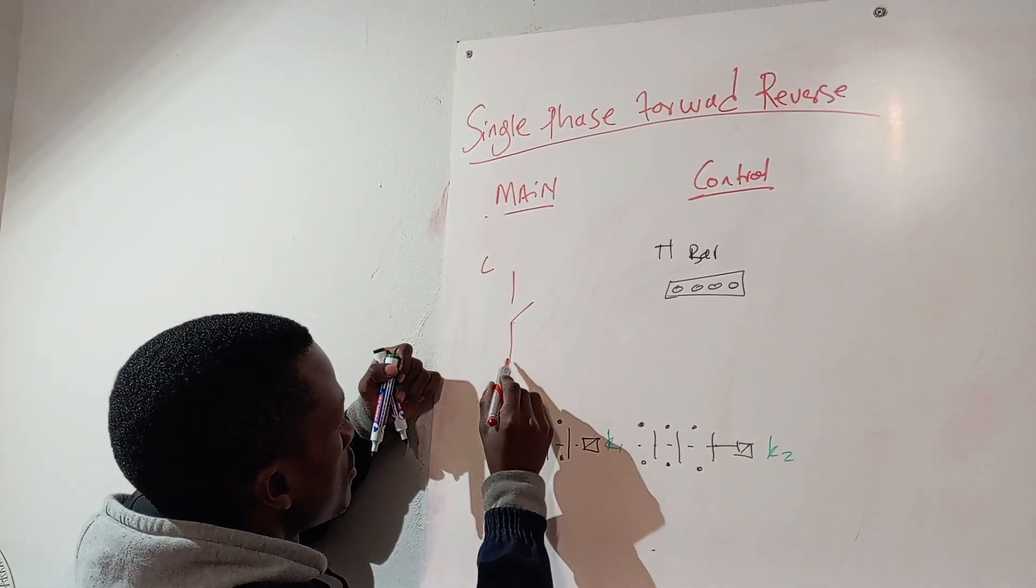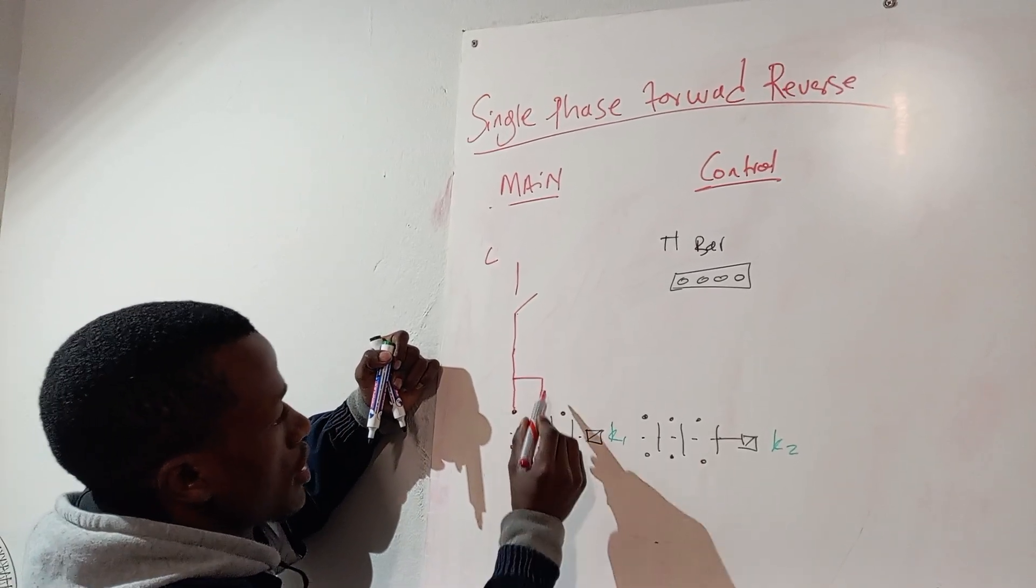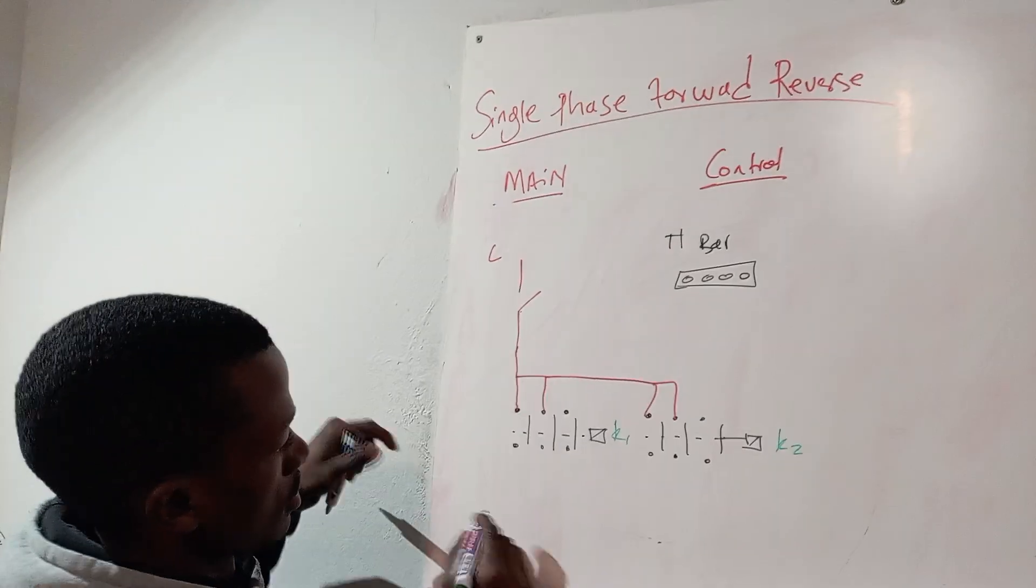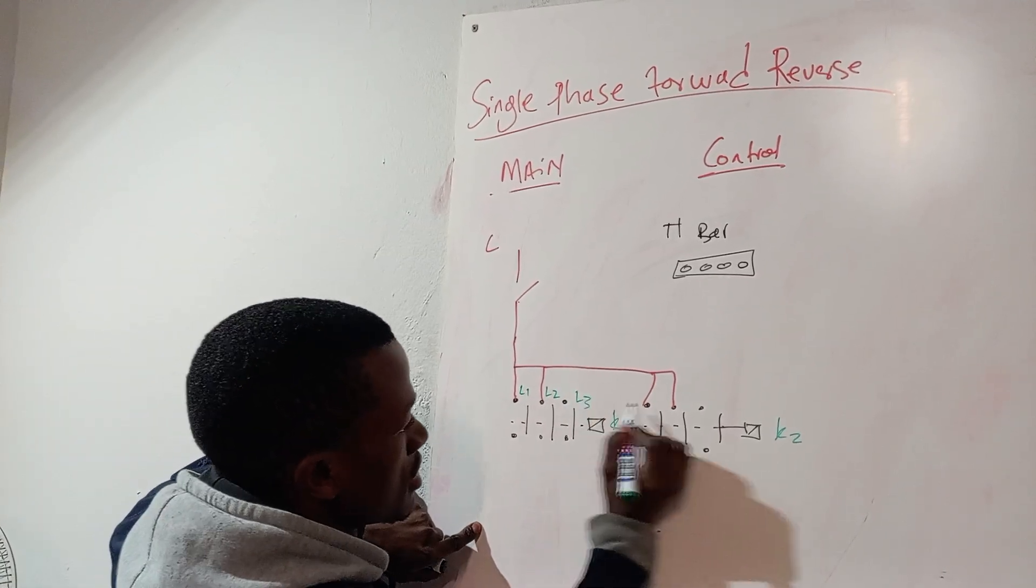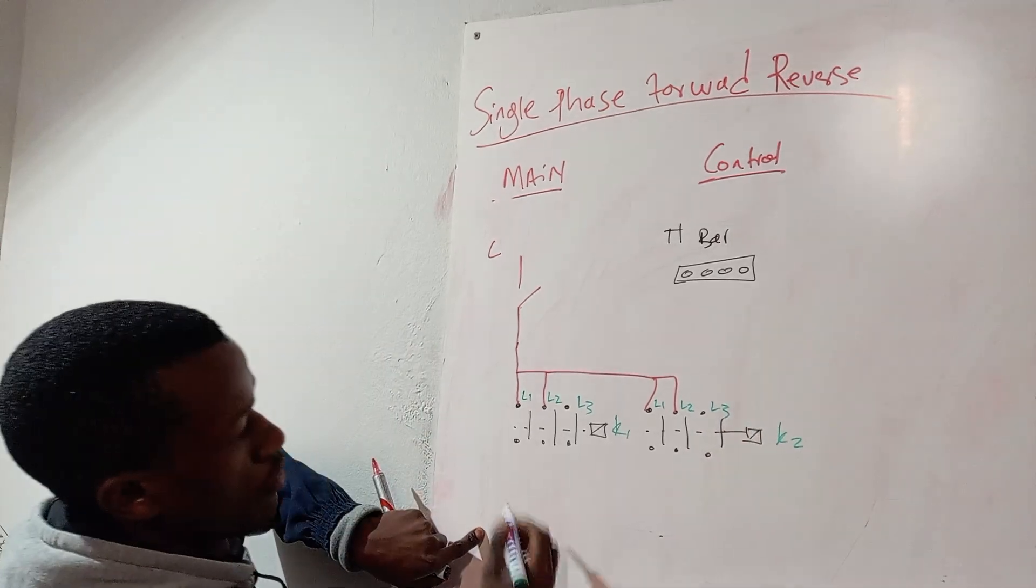And then your power comes, your life comes here and then also here, then it goes there and also there. But now this is your L1, your L2, and this is your L3. L1, L2, L3 of your contactor.